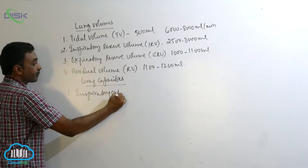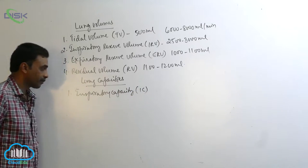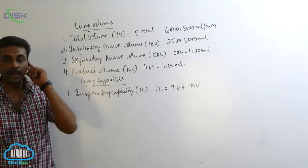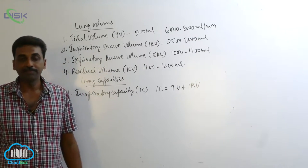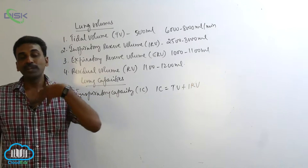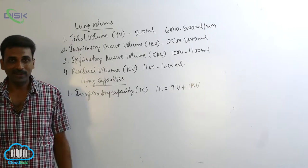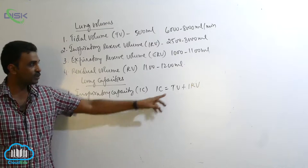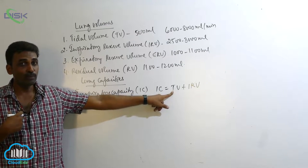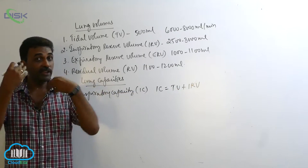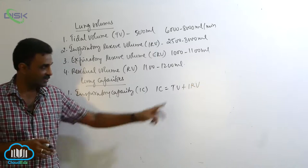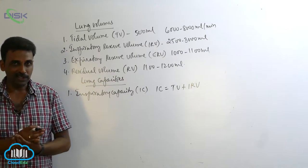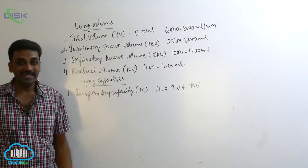Inspiratory Capacity. During quiet breathing, after expiration, the maximum amount of air that a person can inhale is called inspiratory capacity. It includes the normal tidal volume that a person can inhale, plus the inspiratory reserve volume — the amount of air that a person can take in because of forced inspiration. Tidal volume is normal inspiration; inspiratory reserve volume is forced inspiration.